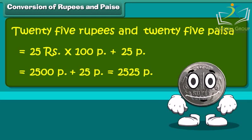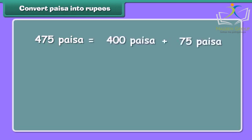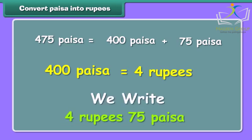Amazing! So much money! It's time to convert paisa into rupees. 475 paisa is equal to 400 paisa plus 75 paisa. As we know, 400 paisa is equal to 4 rupees. Therefore, we can write it as 4 rupees and 75 paisa.